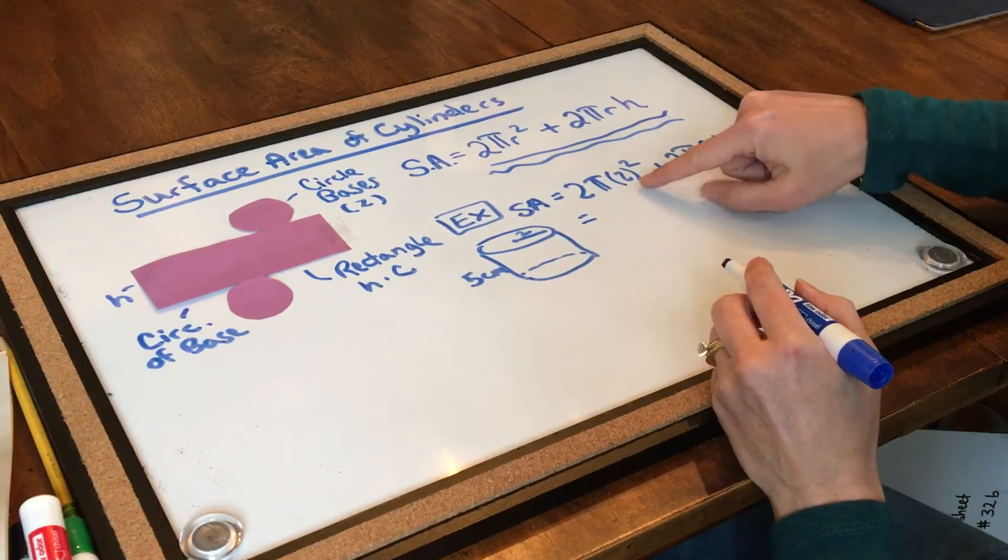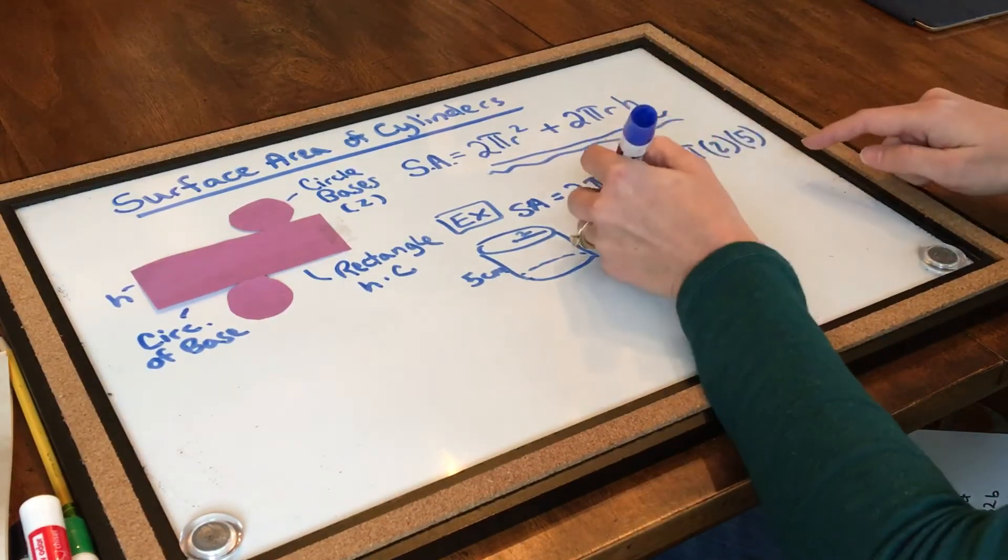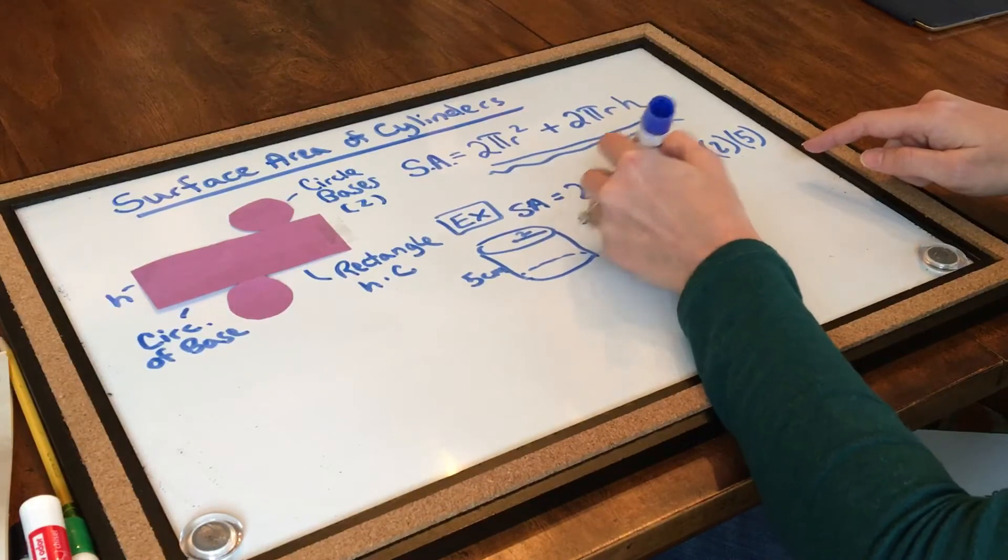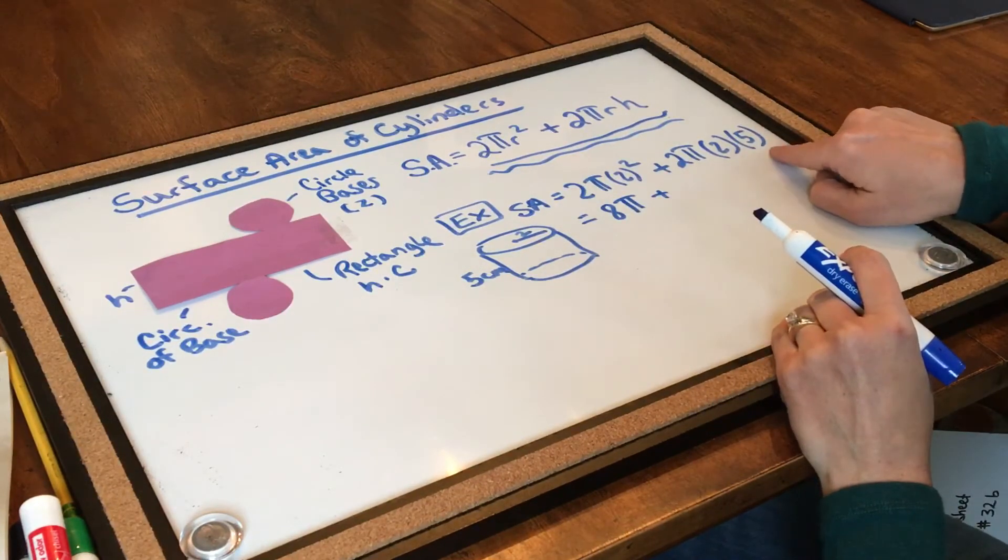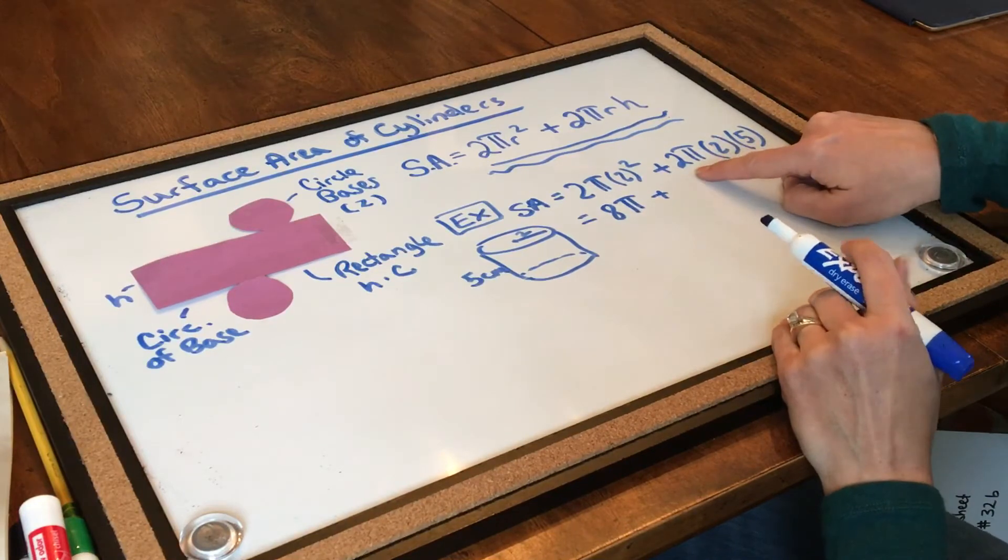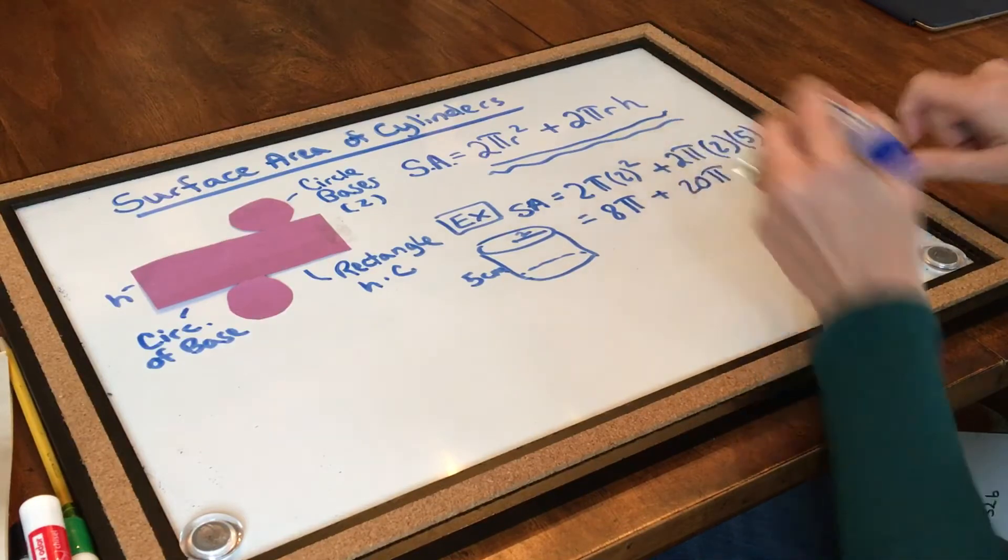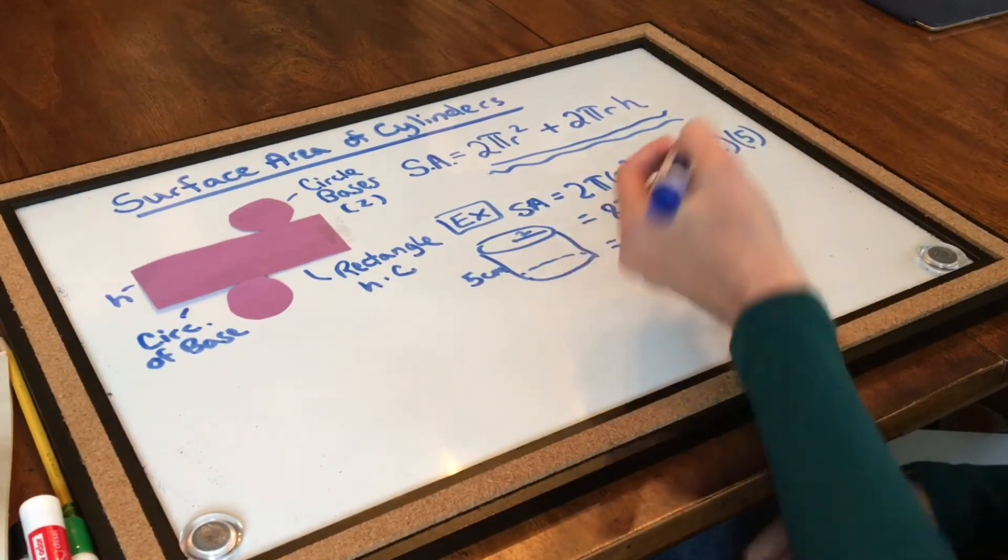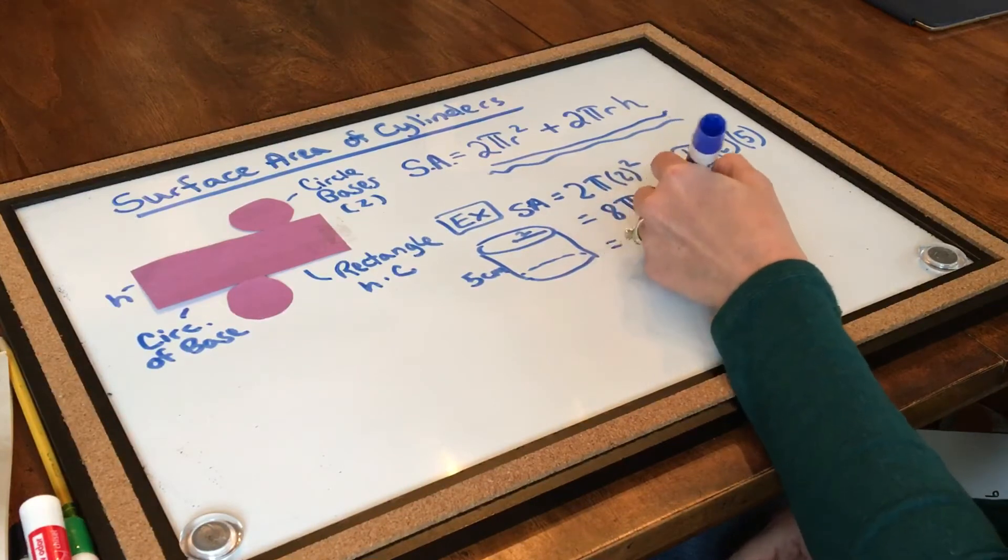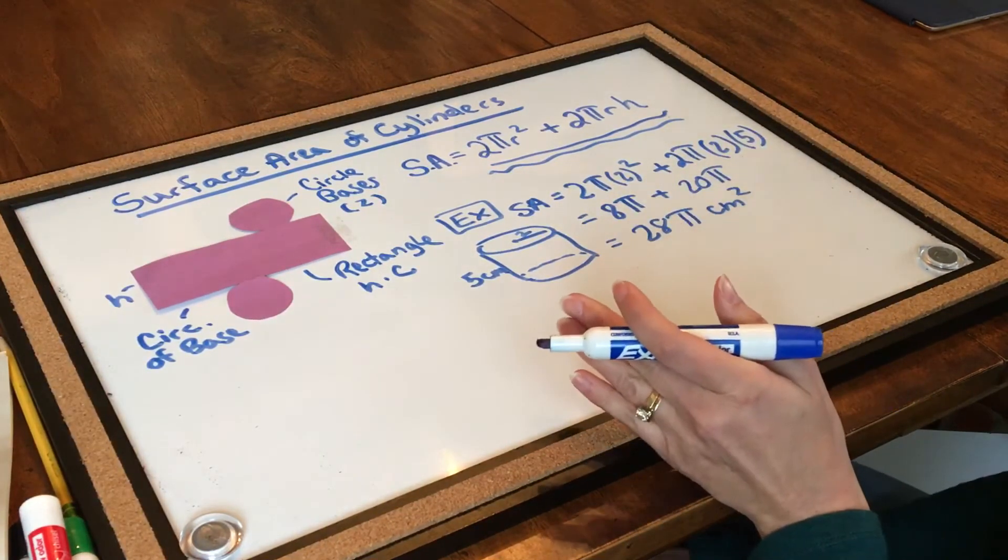Okay, let's see what this turns out to be. So if I take 2 squared, that's 4, and 4 times 2 is 8, so this side is 8 pi. On my other side, 2 times 5 is 10, and 10 times 2 is 20, so this would be plus 20 pi. Now if I have 8 pi's plus 20 pi's, that gives me a total of 28 pi's. So 28 pi centimeters squared, that's my exact answer.